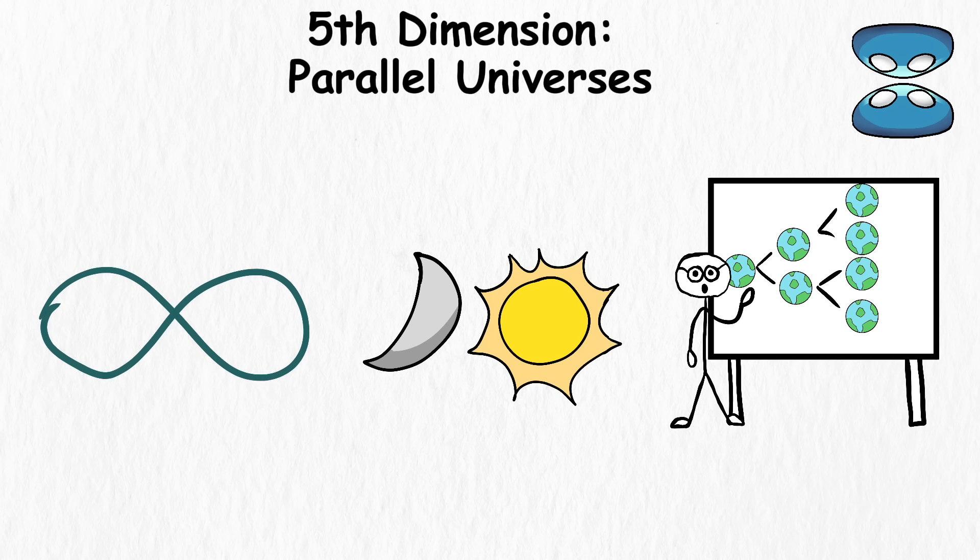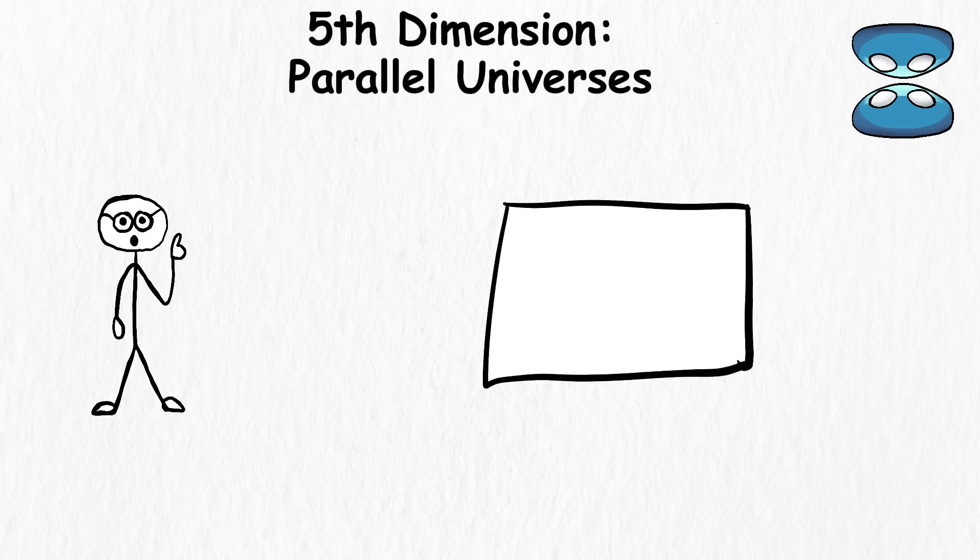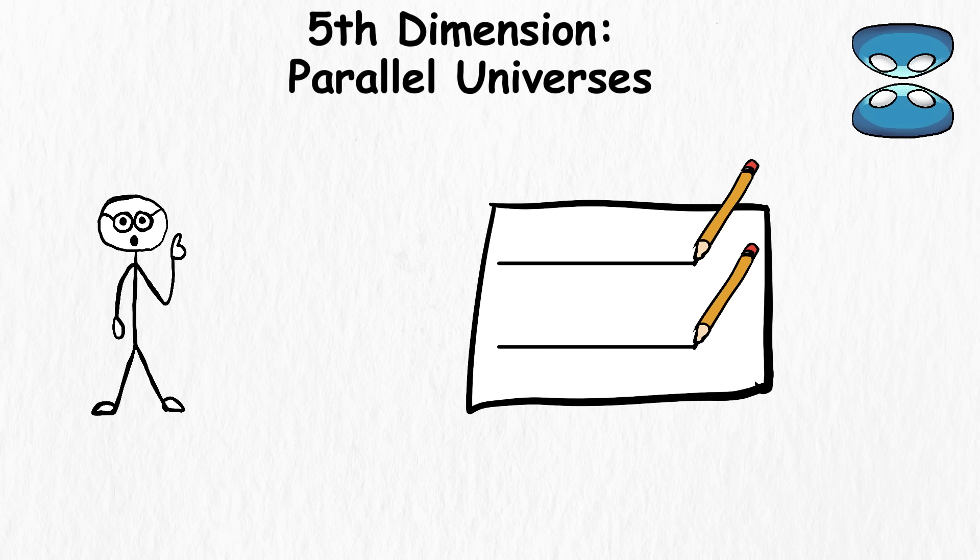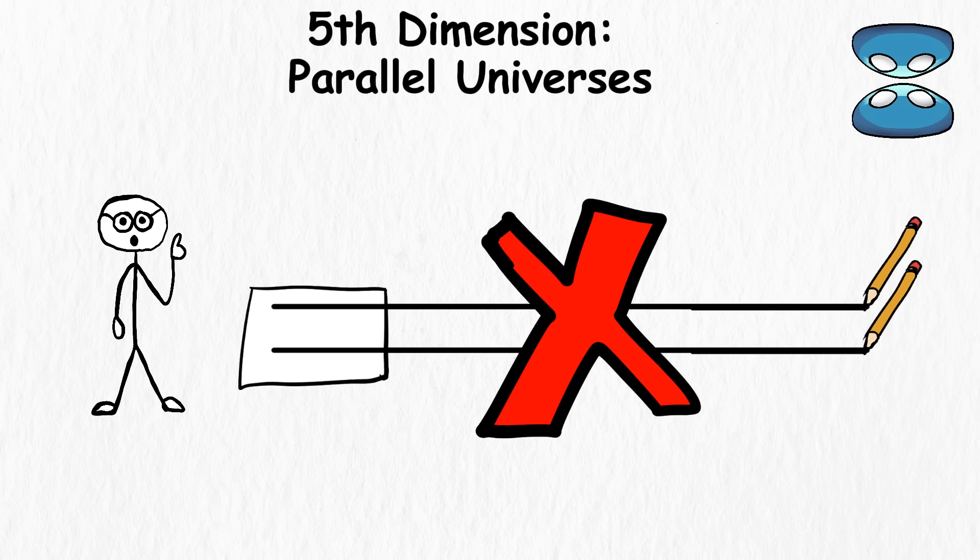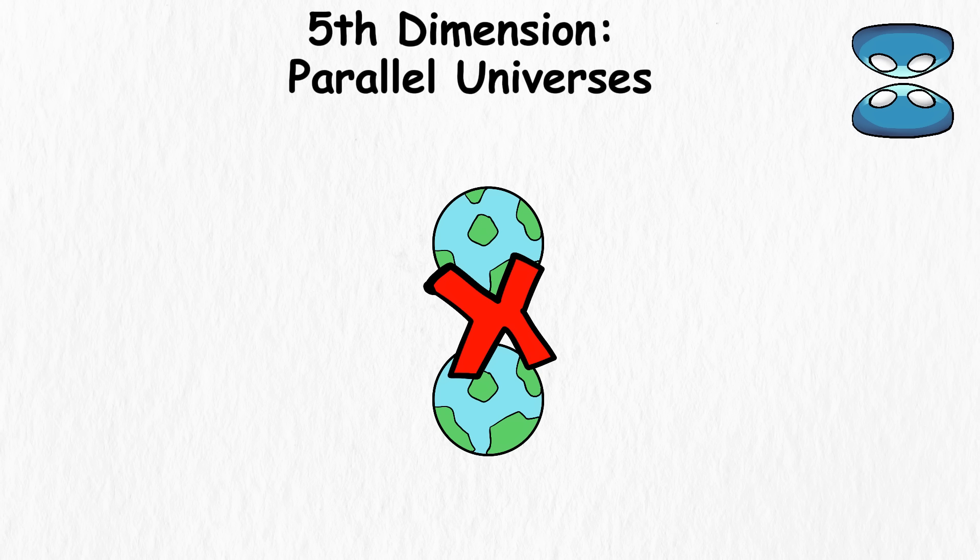But there's a reason why they're called parallel universes. Take a piece of paper and draw two lines parallel to one another. No matter how long those lines are, they will never intersect. Likewise, parallel universes will never intersect, making these other realities impossible for us to access in theory.